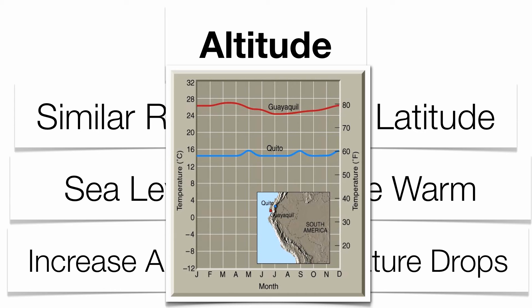Take a look at this map. It shows two cities: Guayaquil and Quito. They are roughly at the same latitude, but they have different altitudes. Guayaquil is more sea-level based, while Quito has a much higher altitude. So even though they're at the same latitude, they have dramatically different temperatures — Quito is colder because it has a higher altitude.